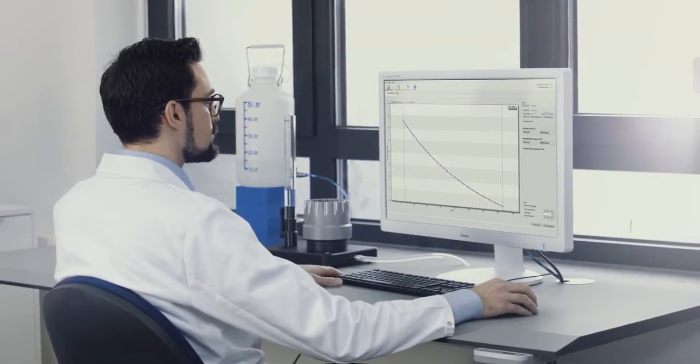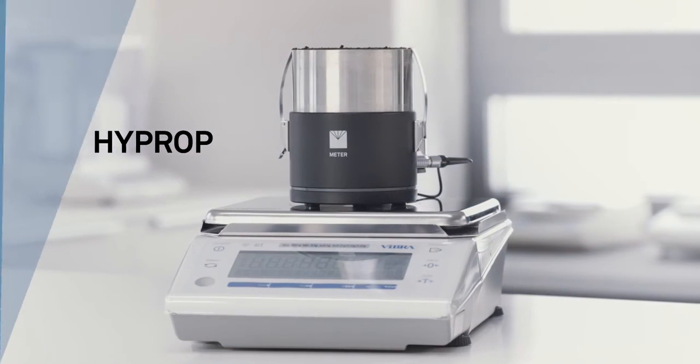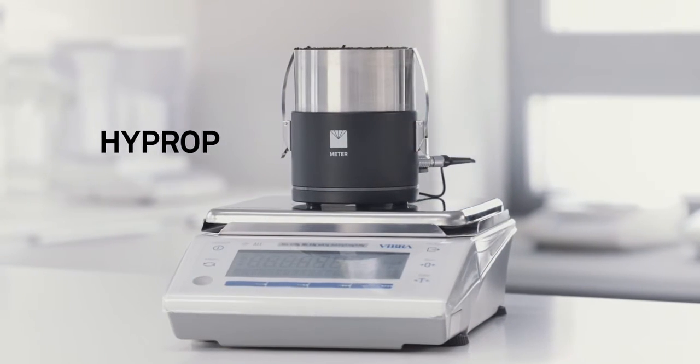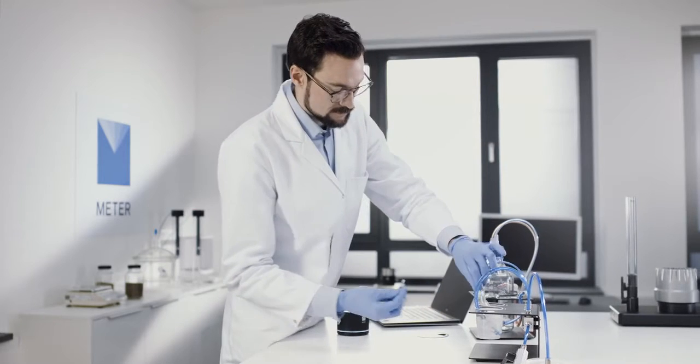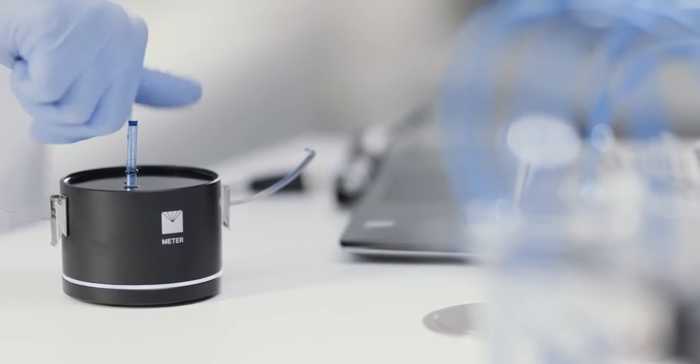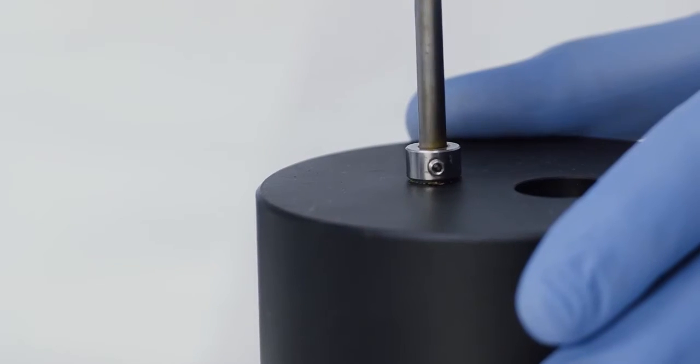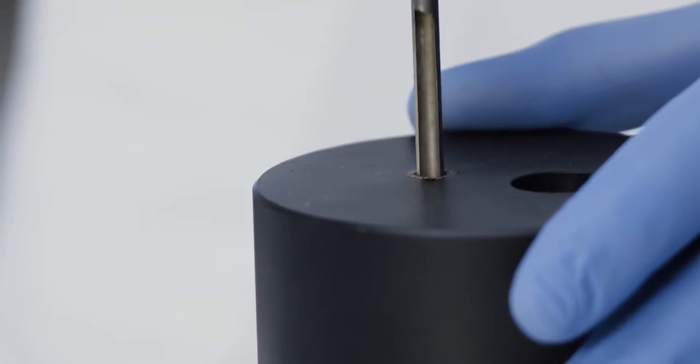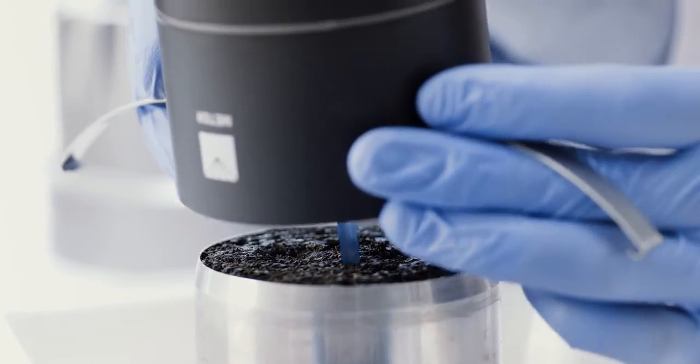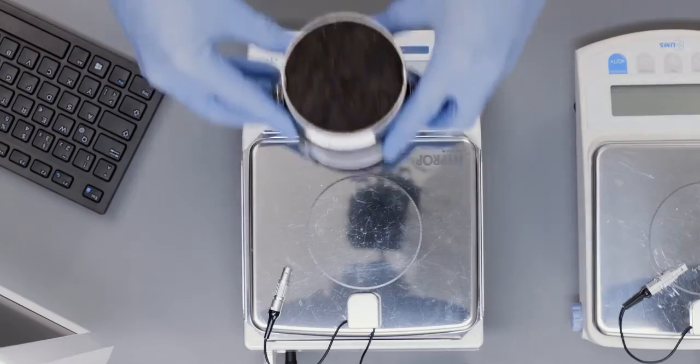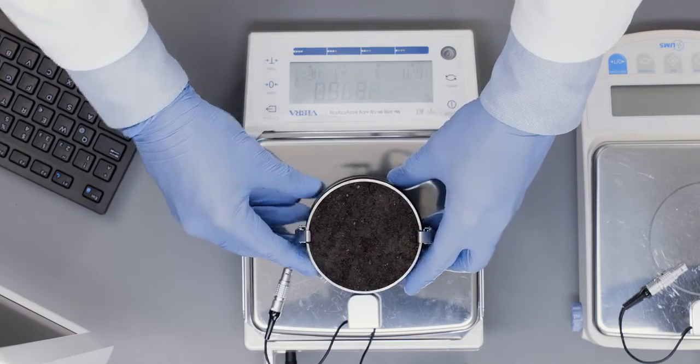Prepare the HyProp, fill it, and connect the tensiometer shafts. Take the sample from the KSAT, auger the holes, and clamp on the HyProp base. Put it on the scale and connect the HyProp.